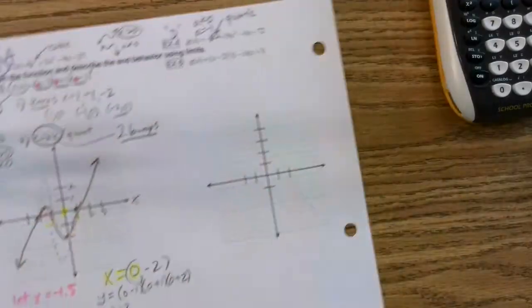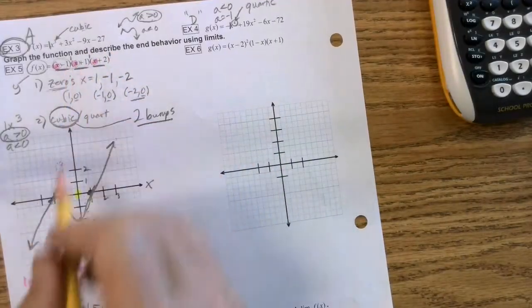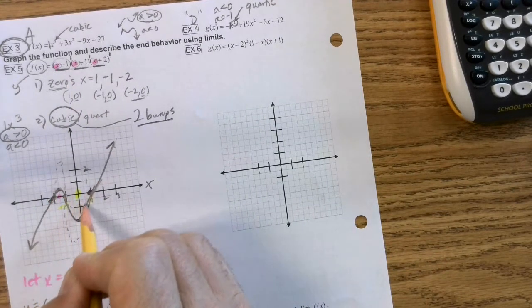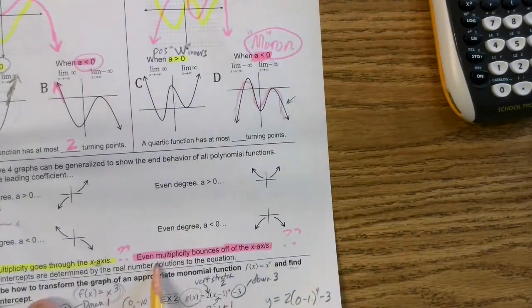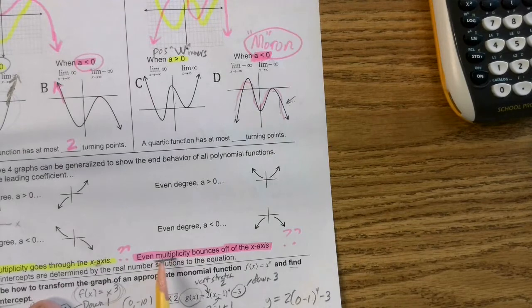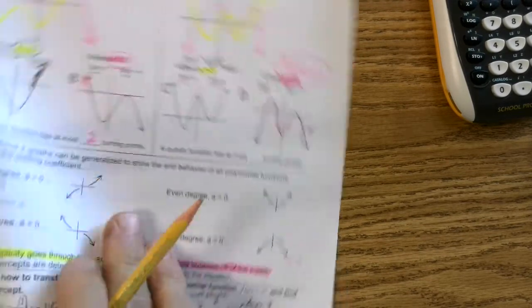That's what this is talking about. See, at each one of these zeros, it goes through the x-axis. That's a huge clue. So what is this even multiplicity all about? Well, that's going to happen on this next problem, so pay attention to that.